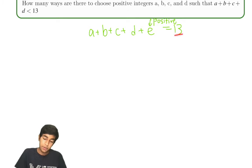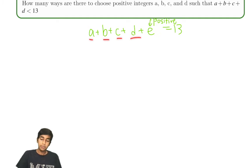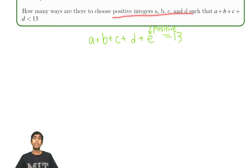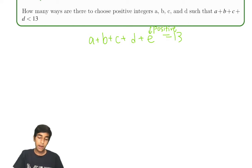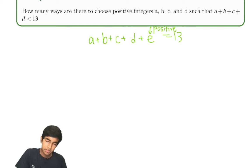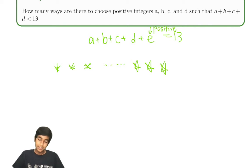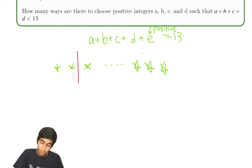It's essentially distributing 13 amongst five variables. Since all of them are positive integers — A, B, C, D, and E — we imagine 13 stars and four bars.